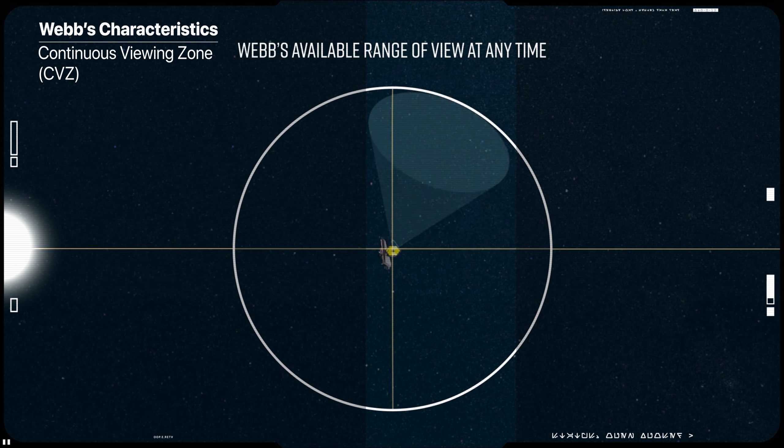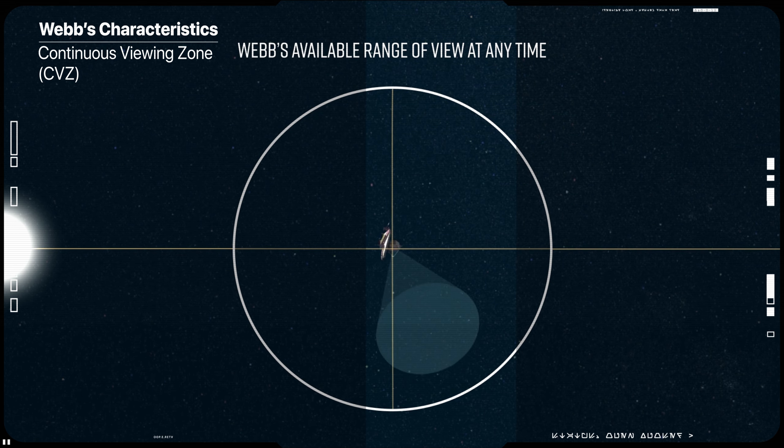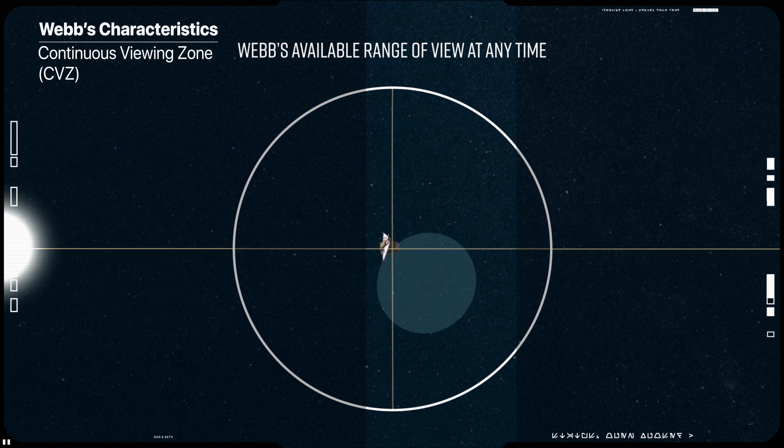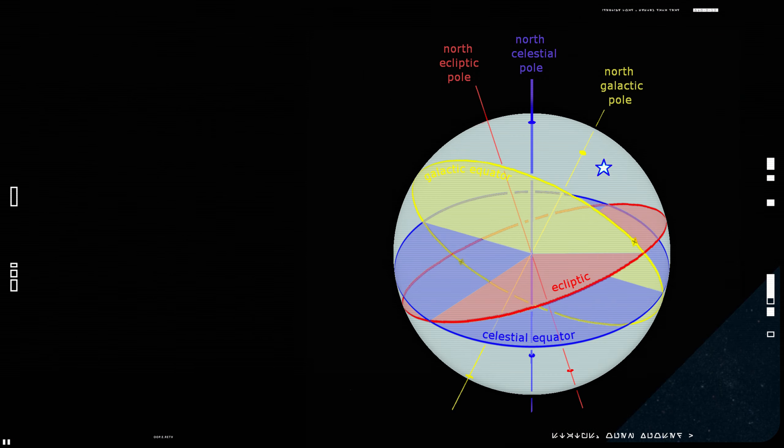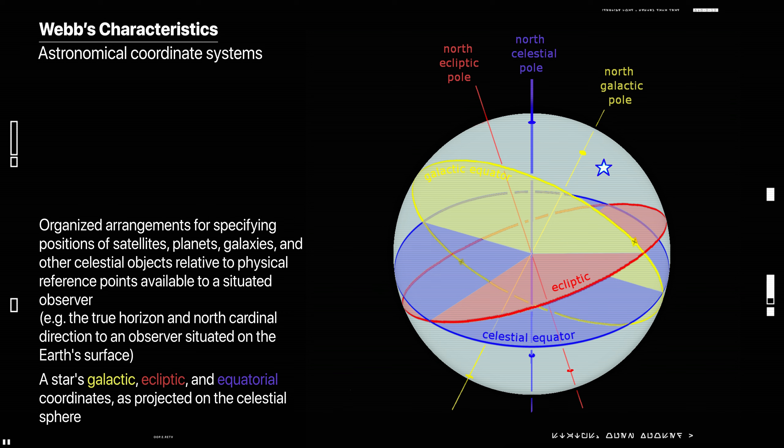Although the roll flexibility is still about plus or minus 5 degrees, the James Webb field of view rotates around the V1 axis through the entire available 360 degrees over the course of the year.